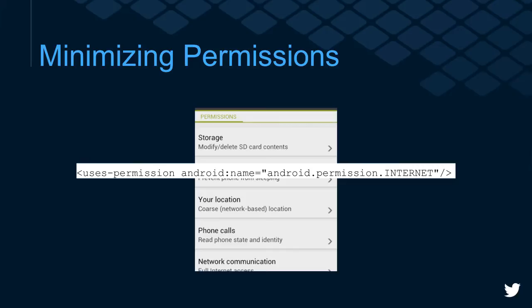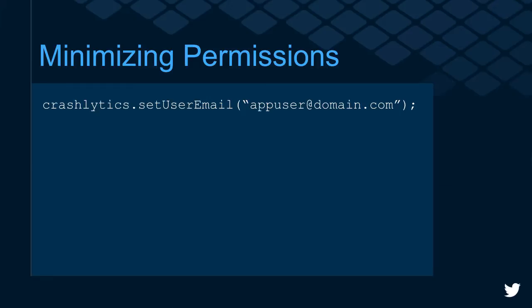In general, apps and especially SDKs should limit the number of permissions. The Crashlytics kit requires just one permission — internet, of course. If our SDK wanted to capture the user's email so the developer could see it in crash reports and contact them, we'd have to require a scary permission like GET_ACCOUNTS, which would frighten a lot of users. Instead, our SDK allows developers to set that through an additional hook — they can choose to get that information themselves, perhaps by prompting the user, and then set it on Crashlytics at runtime as a custom key which appears in the Crashlytics dashboard.